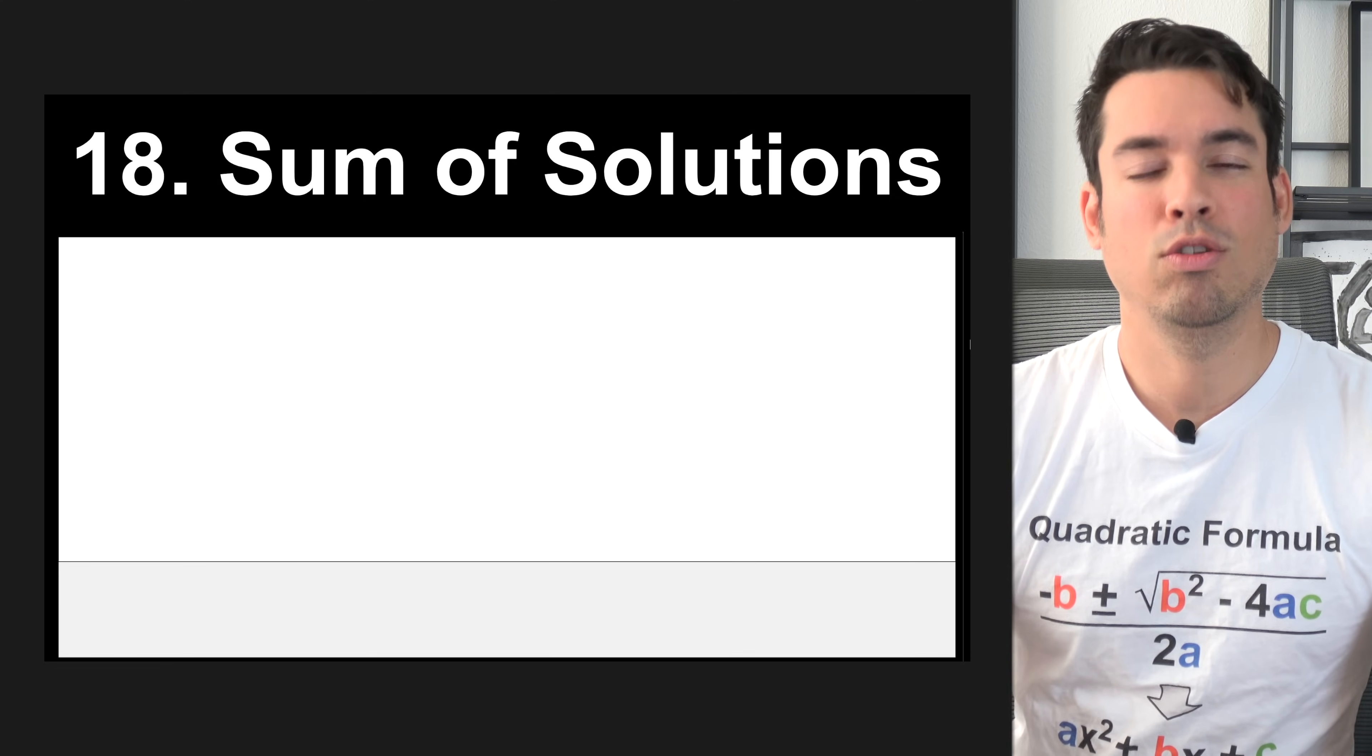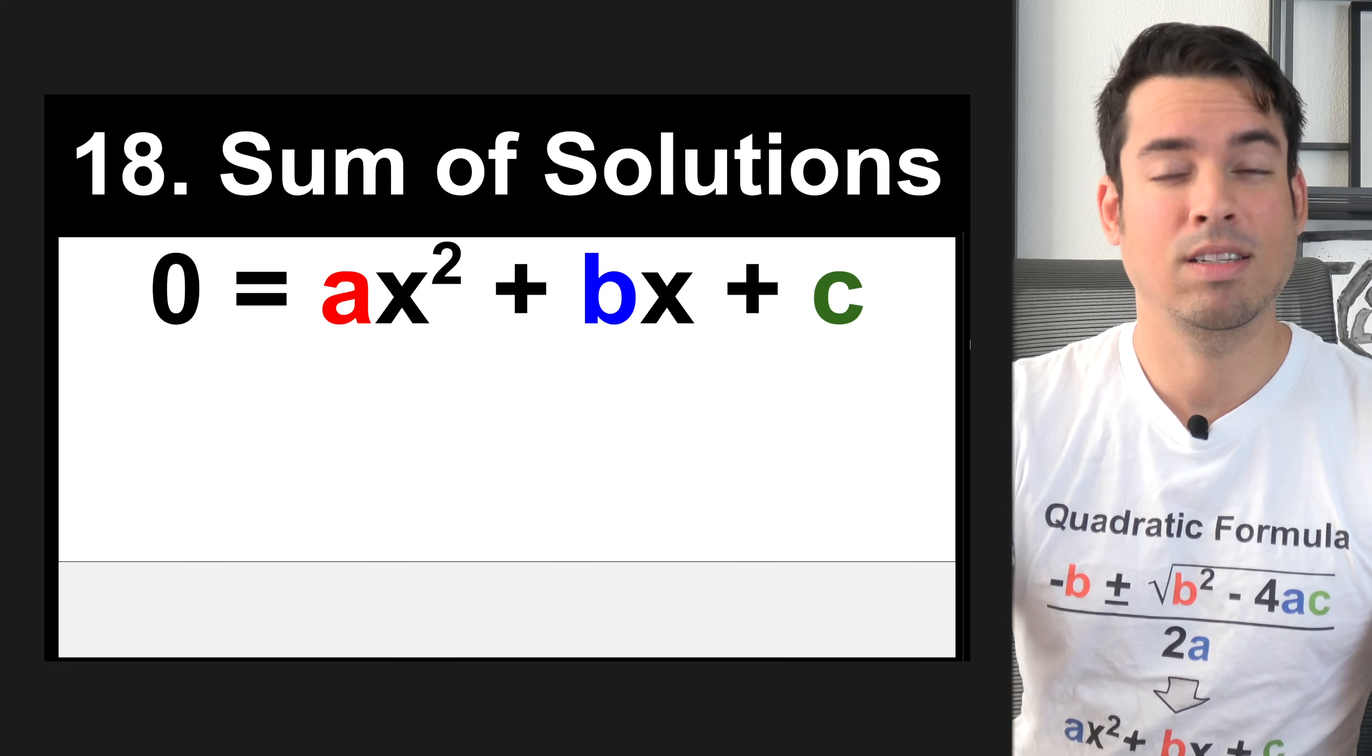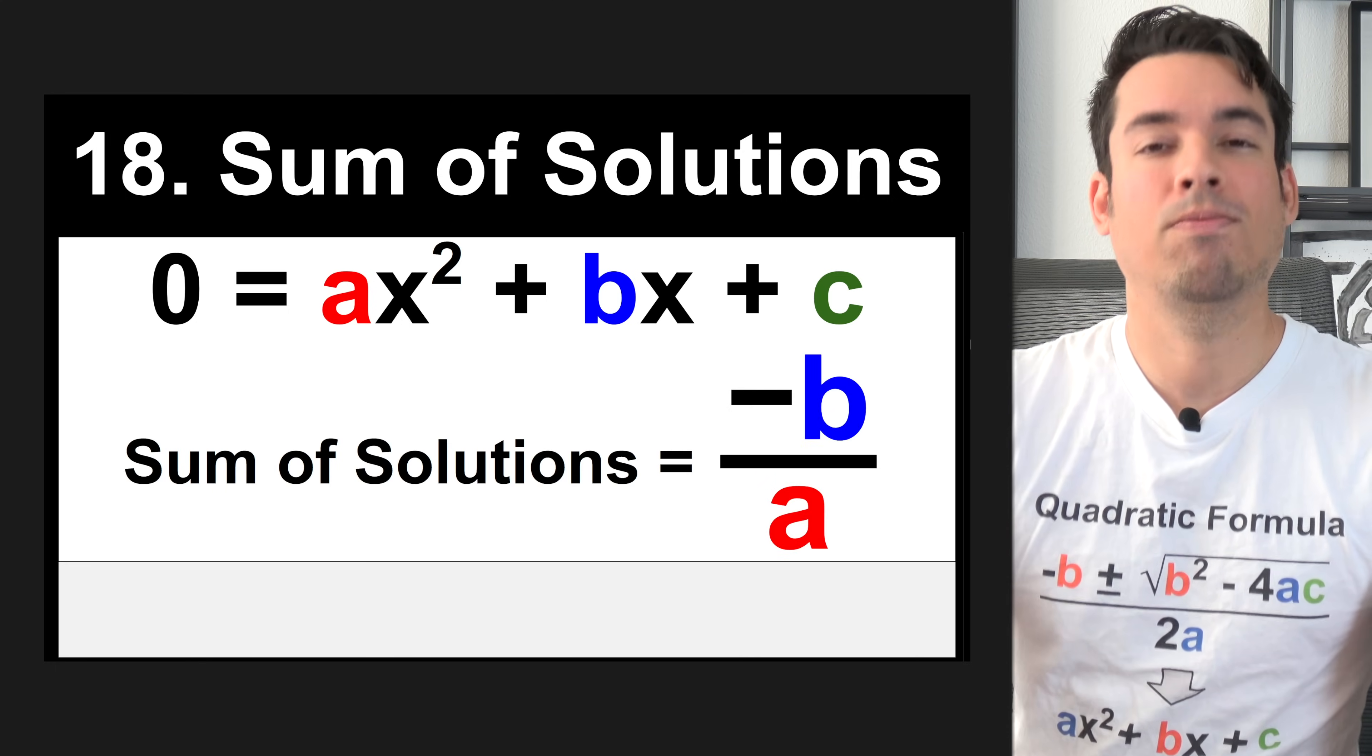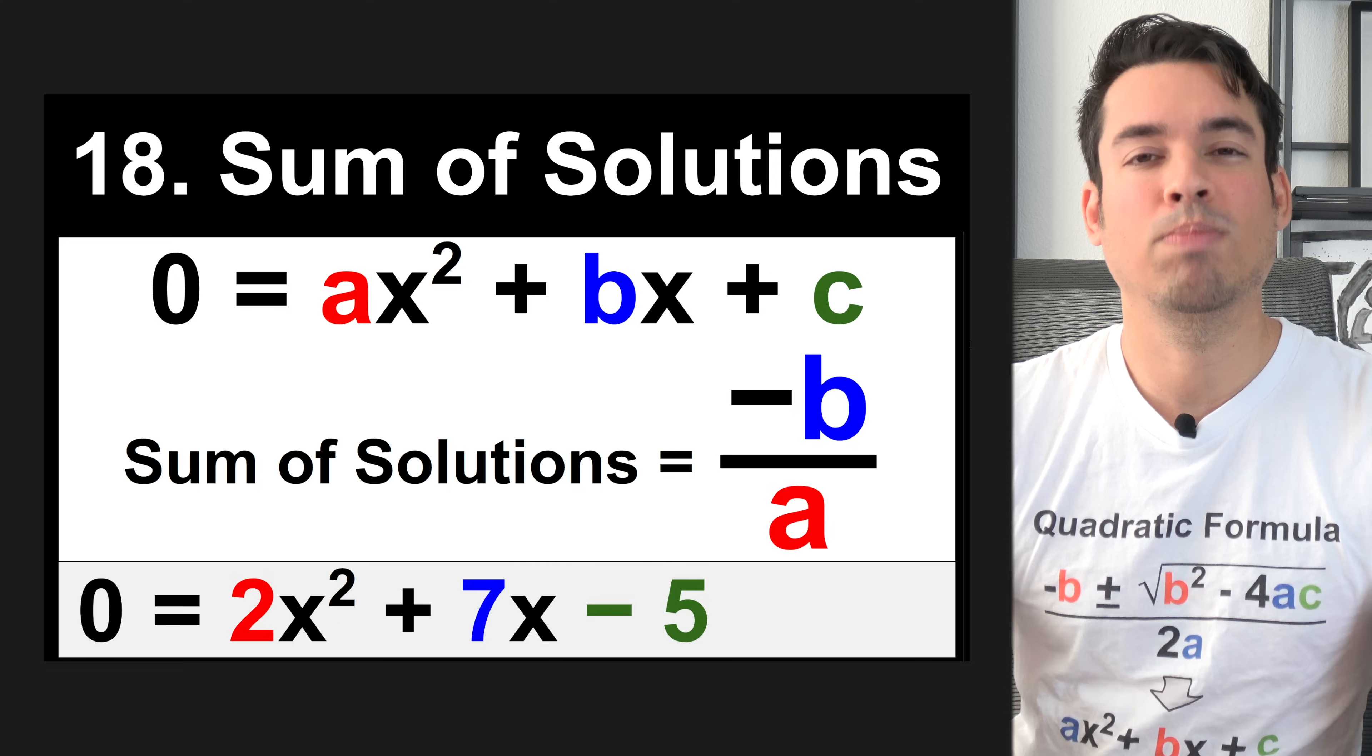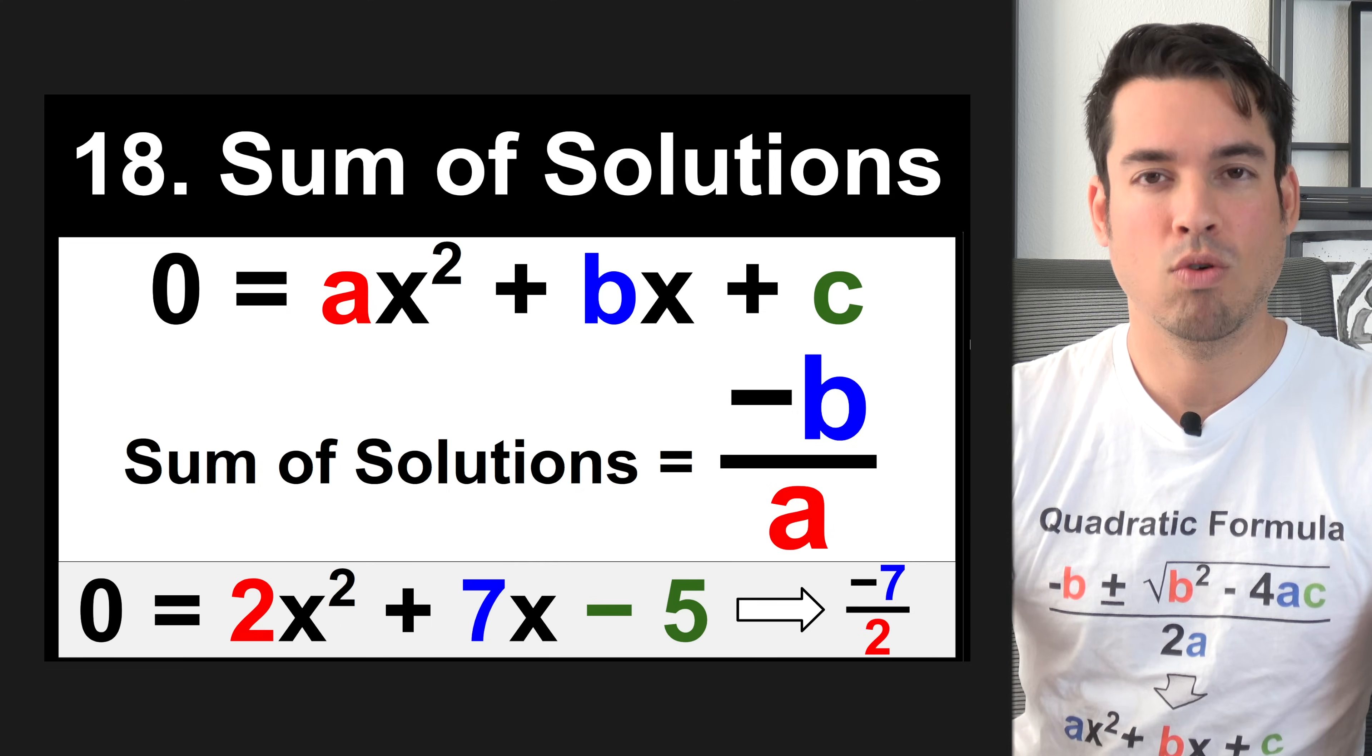Next, we've got the sum of solutions for a quadratic. If we have a quadratic in standard form set to zero, and we're trying to find the sum of the solutions, it's simply negative b over a. You can find the solutions if you want and then add them together, but this is just a little shortcut. For example, if we have zero equals 2x squared plus 7x minus 5, the sum of the solutions would be negative 7 over 2.